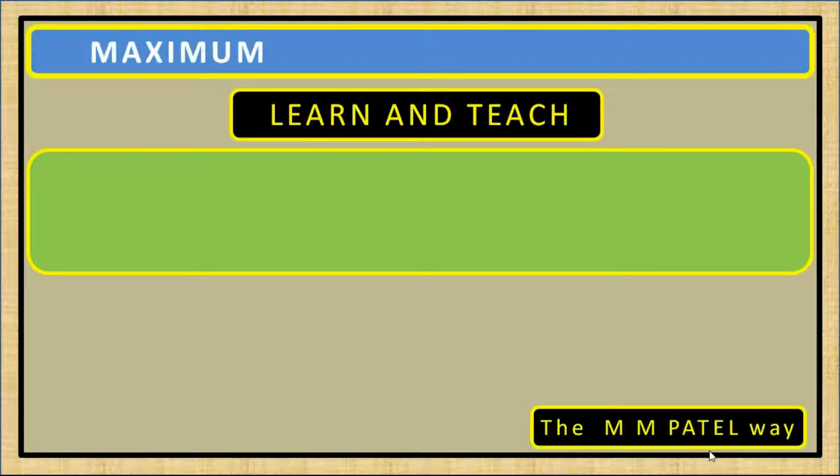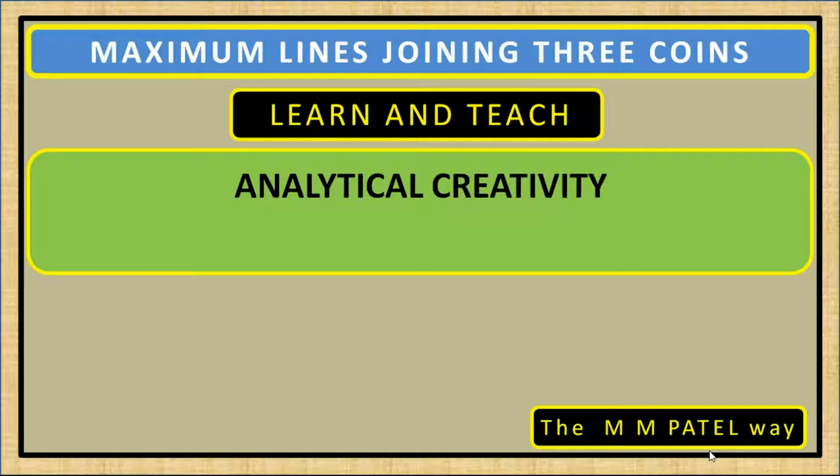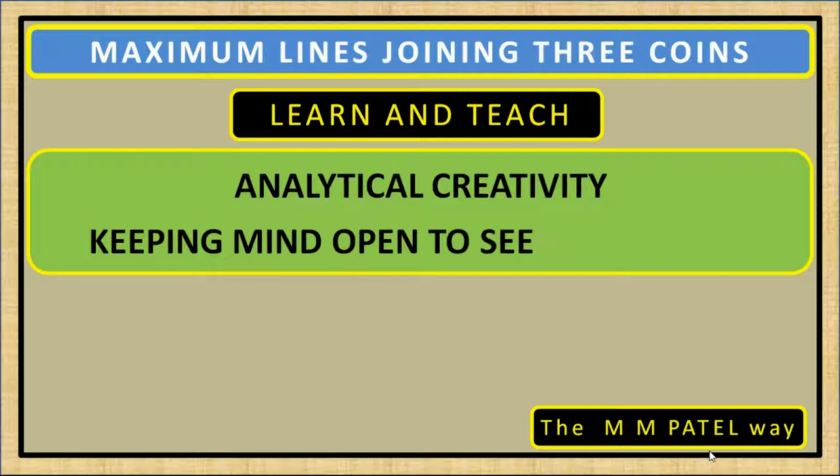Maximum Lines Joining Three Coins. Let's revisit the learning objectives: analytical creativity and keeping your mind open to see possibilities. That means we will have to go beyond our preconceptions and prejudices, maybe biases.